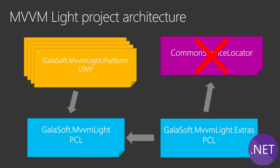Common Service Locator also causes issues because you have an additional reference. My main issue is that when I started porting MVVM Lite to .NET Standard, I wanted to go with 1.0 — as low as possible. When you do a class library, try to go as low as you can. But Common Service Locator was not even on .NET Standard at the time.